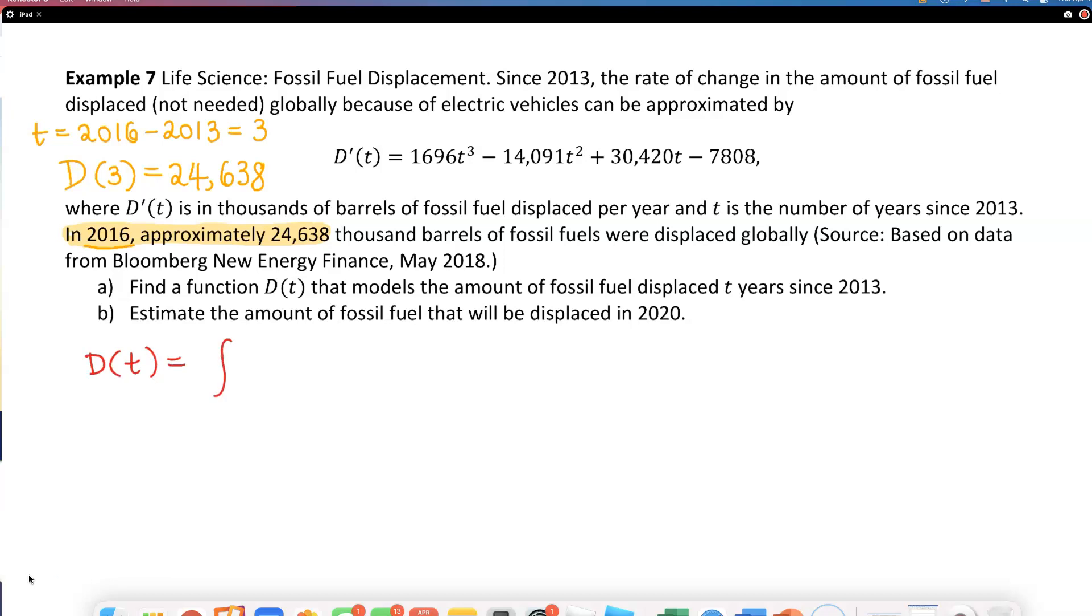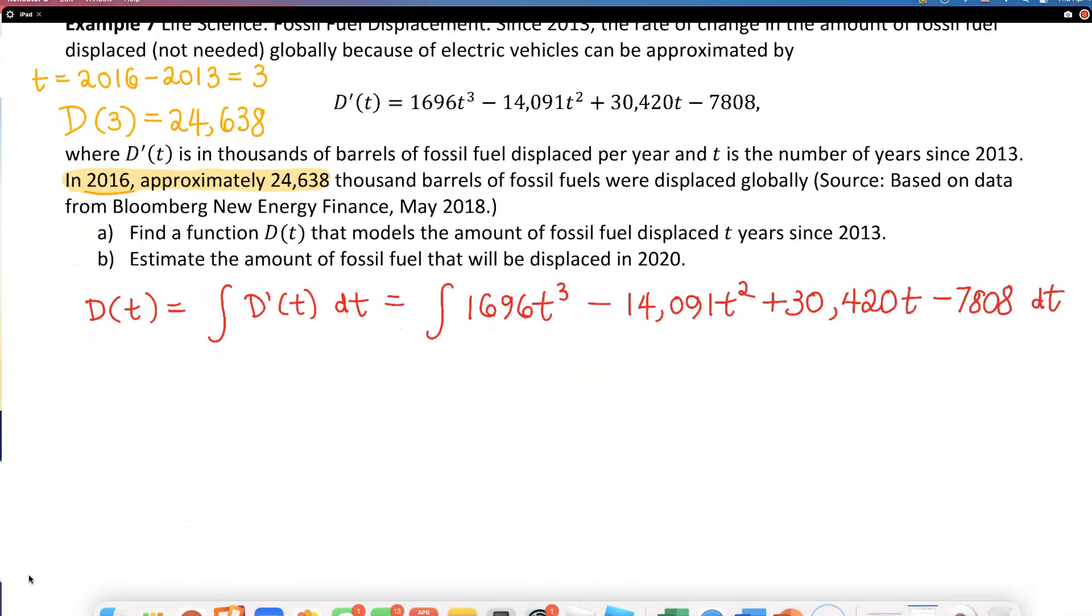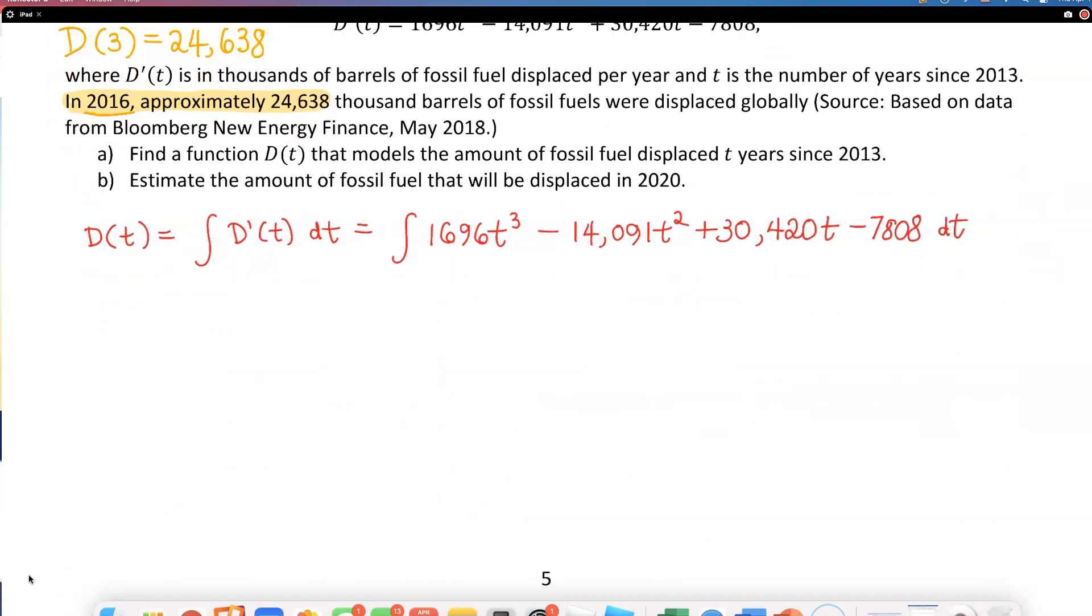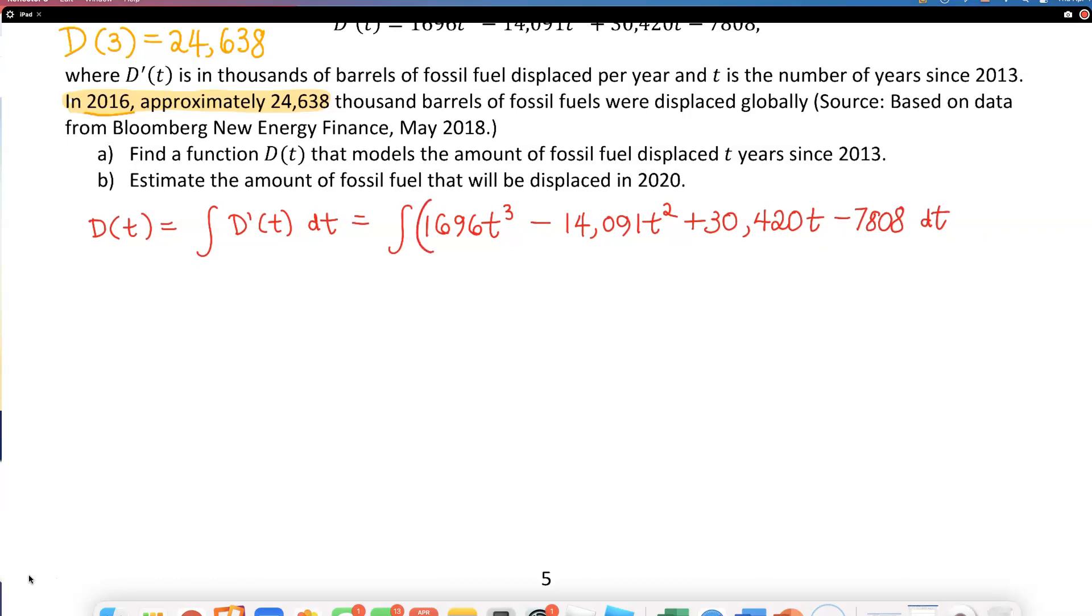So let's get right to it. D(t) is equal to the antiderivative of D'(t). Makes perfect sense - we're going to go backward and find the antiderivative of this function. The numbers are big but the rule we are using is still the same. Don't forget to put dt after it.